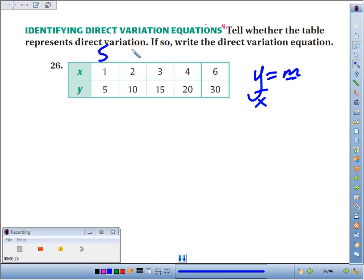5 divided by 1 is 5. 10 divided by 2 is 5. 15 divided by 3 is 5. 20 divided by 4 is 5. 30 divided by 6 is 5. There is this constant multiple.